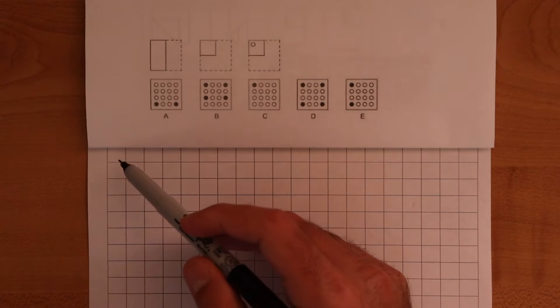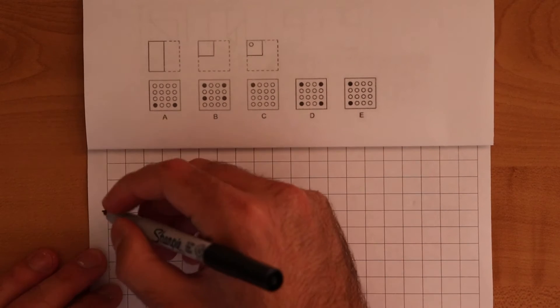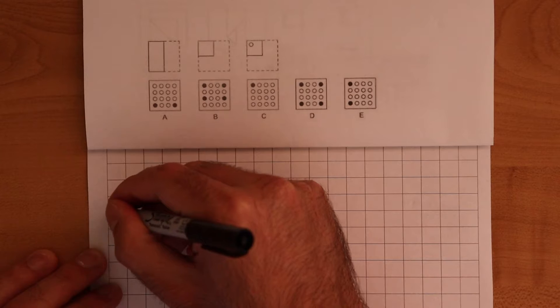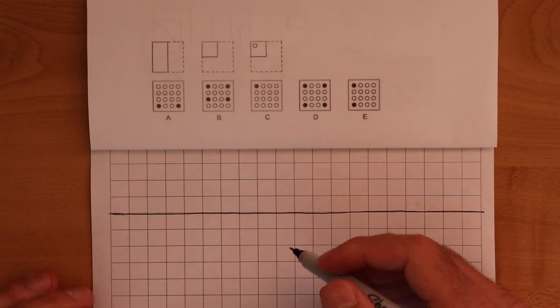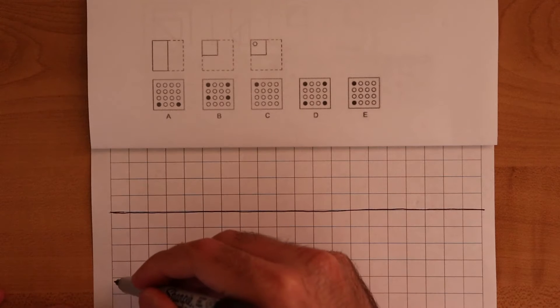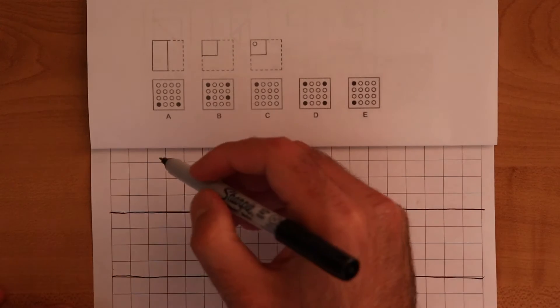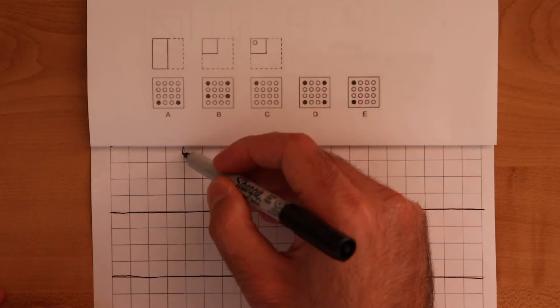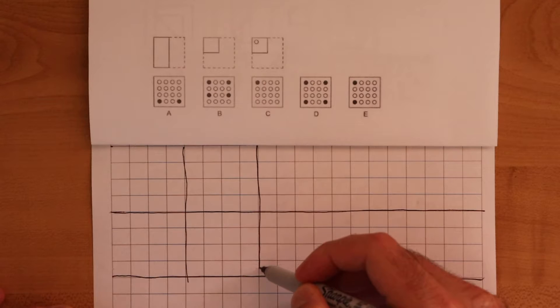And what you want to do first is essentially copy these four by four squares. We'll go ahead and make four by four squares on this piece of paper. We'll draw one line horizontally like that, we'll get four more, go horizontally, and then we'll draw our vertical lines so that we have our four by four boxes.